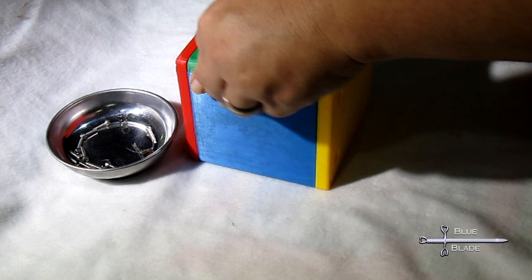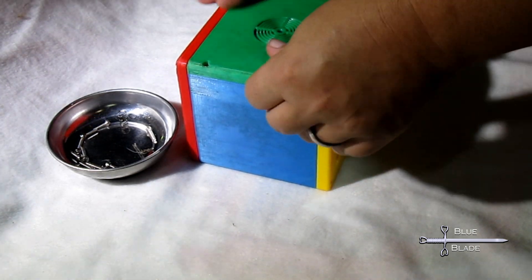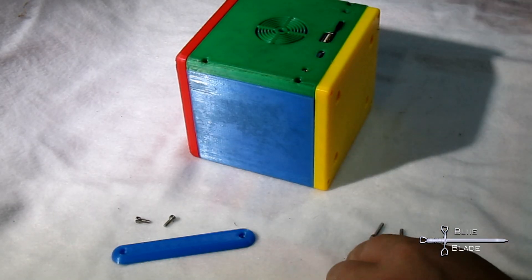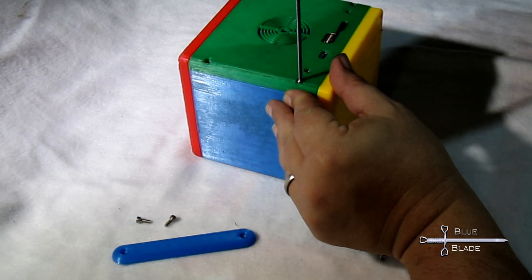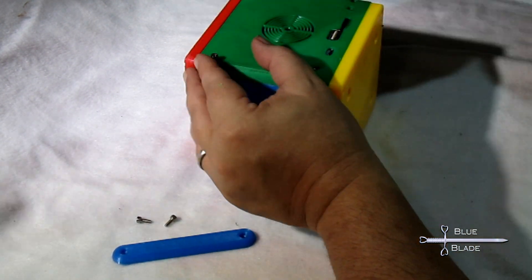Now fit the back plate in place. Secure the back plate with eight longer 3 millimeter bolts, two on each side, two on the bottom, and two on the top.